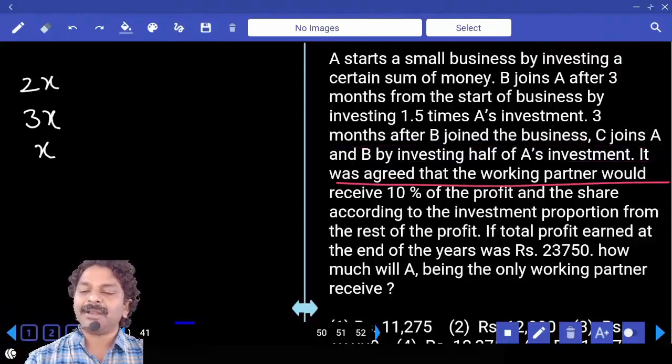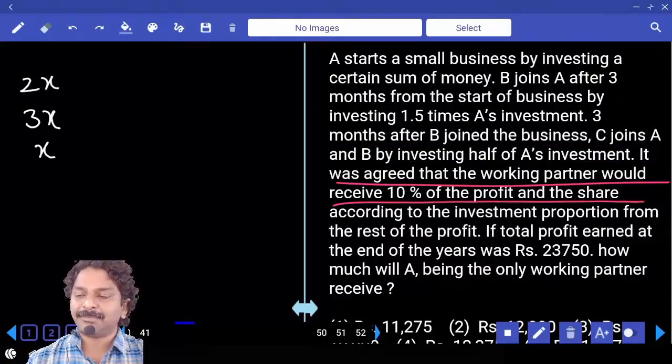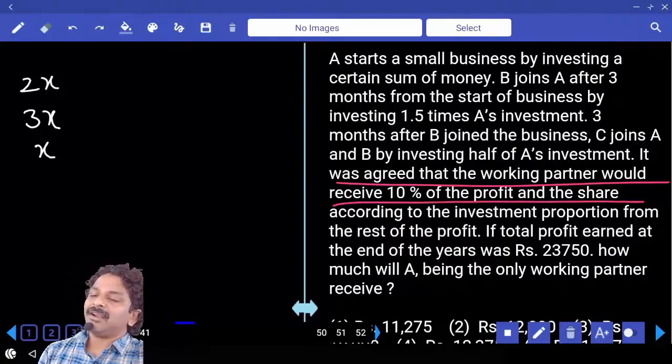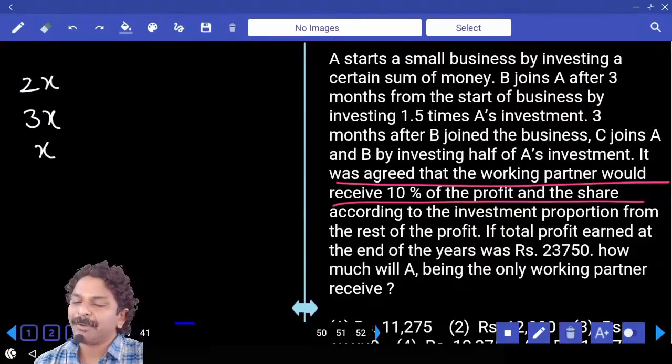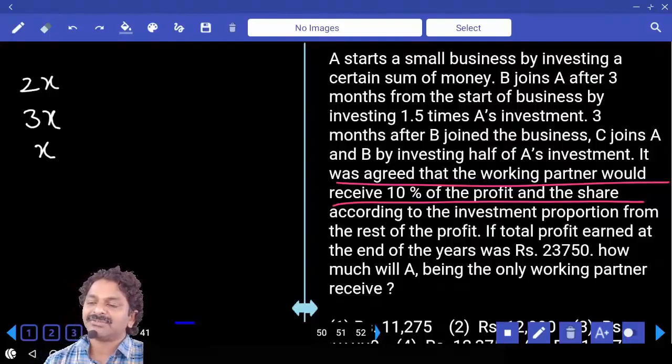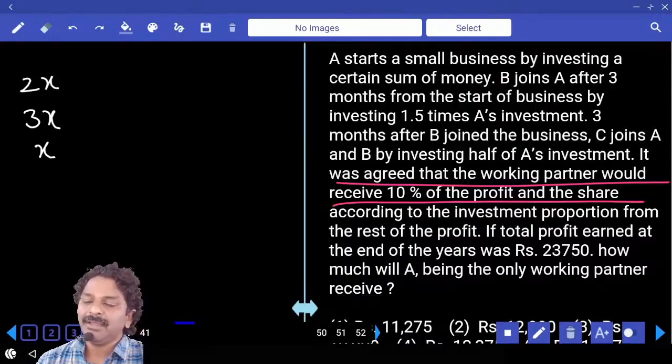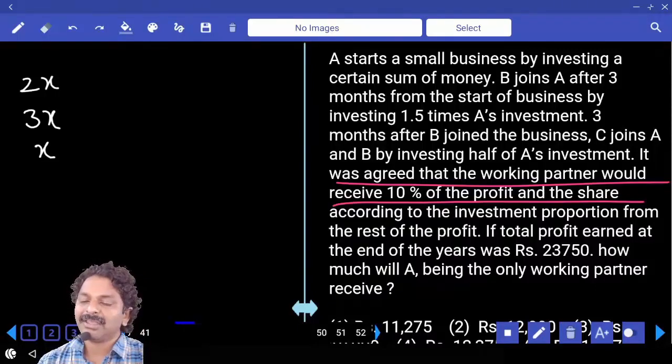It was agreed that the working partner would receive 10% of the total profit and the share according to the investment proportion from the rest of the profit. Total profit earned at the end of the year was Rs. 23,750. How much will A being the only working partner receive?